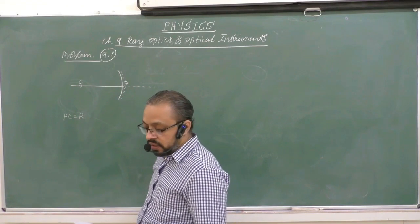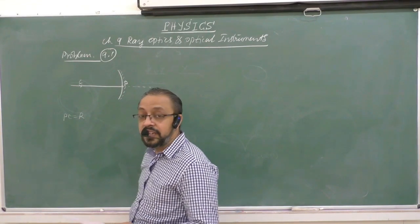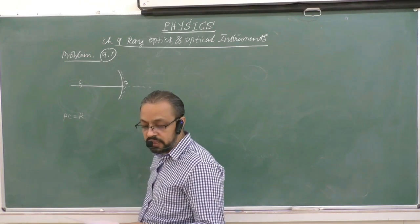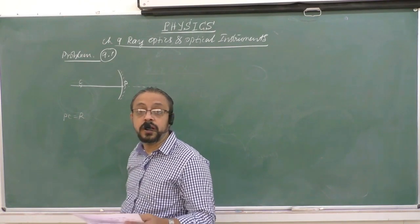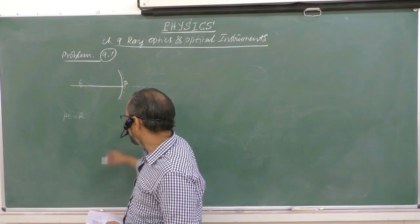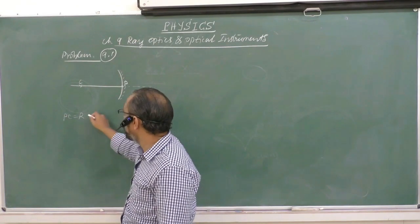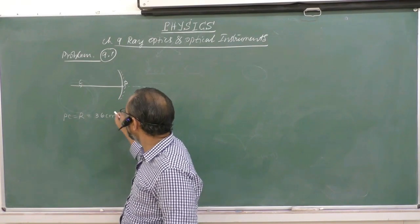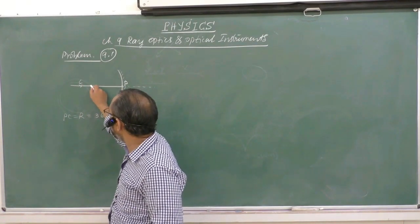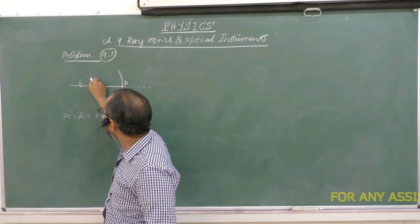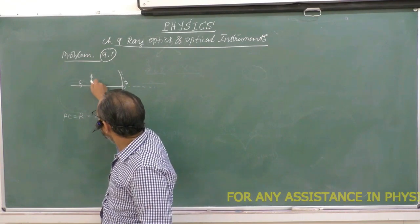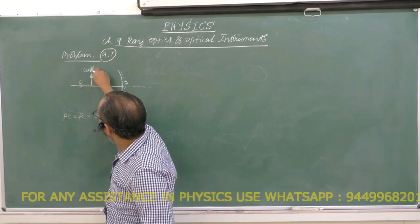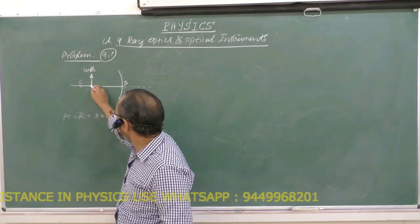it is said the size of the candle is 2.5 centimeters, which is placed 27 centimeters in front of the concave mirror. So 27 centimeters I should note, and this is 36 centimeters which is given. And now, 27 centimeters, say somewhere here, so this could be the position of the candle. This is the candle.